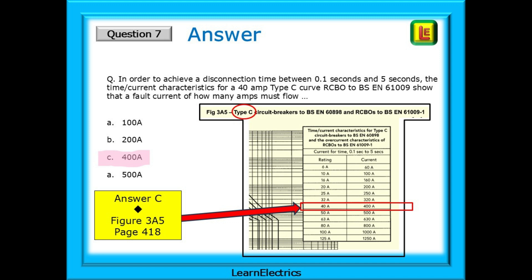Now we need to find the tables for time and current characteristics as these are mentioned in the question. Using the index, page 606, find time current characteristics in the right-hand column. Then go to appendix 3, as suggested.